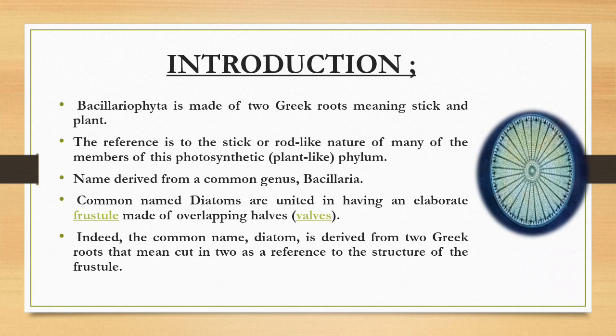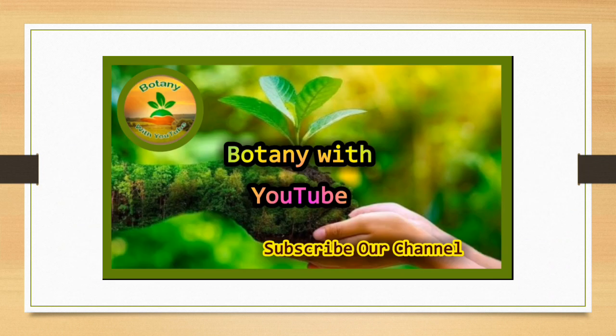Introduction: Bacillariophyta is made up of two Greek word roots, meaning 'stick' and 'plant,' referring to the stick or rod-like nature of many members of this photosynthetic phylum. The name is derived from the common genus Bacillaria. Commonly named diatoms, they are united in having an elaborate frustule made up of overlapping halves or walls. The common name 'diatom' is derived from the Greek word root meaning 'cut into two,' a reference to the structure of frustules. You can see here in the diagram the ring-like structure of diatoms.